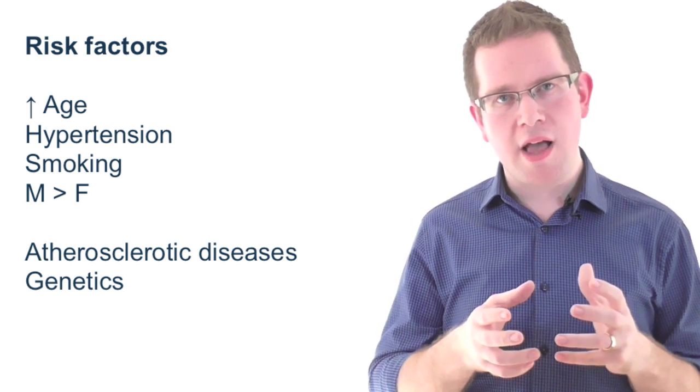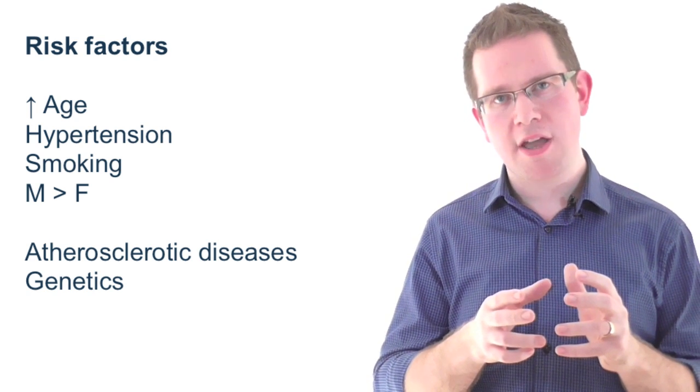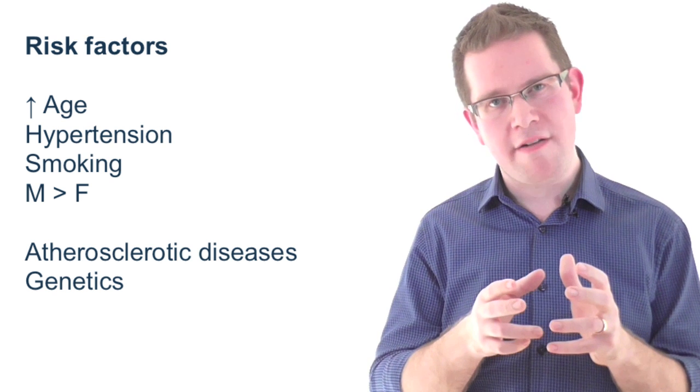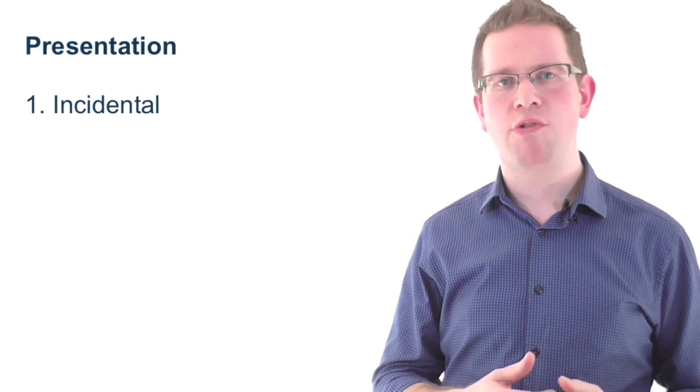It is important to realize that patients with AAA are actually far more likely to die of other cardiovascular disease than rupture of their aneurysm. AAAs are usually asymptomatic unless they rupture. Historically, they were detected incidentally through tests such as CT, ultrasound, or MRI which were performed for other diseases, often cancer secondary to smoking.